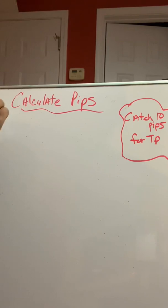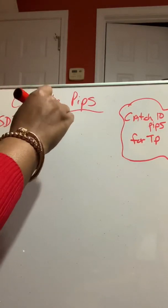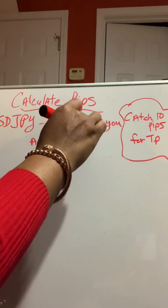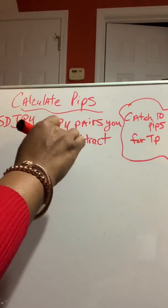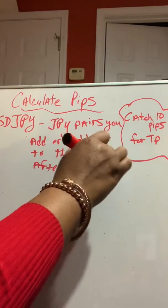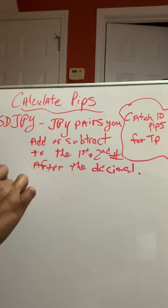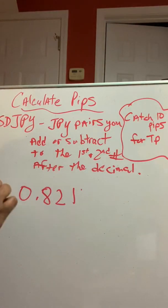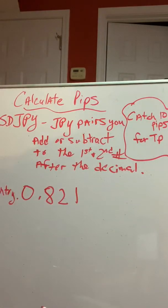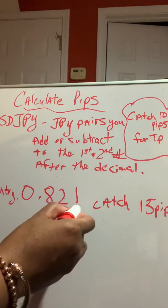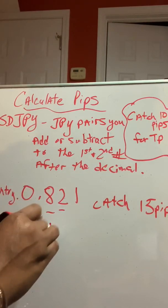So, if you wanted to trade USD, JPY. JPY pairs, you add or subtract, depending on if you're in a buy or a sale, to the first and second number after the decimal. Okay? Excuse my chicken scratch, but you get it. So, if we enter the market at 0.821. Okay? This is where we entered entry. Right? Into the 0.821 on a USD, JPY pair, and we want to catch 15 pips. You are not going to go add to the third or fourth number. You're going to add to the first and second number. So, 15 will be added there.